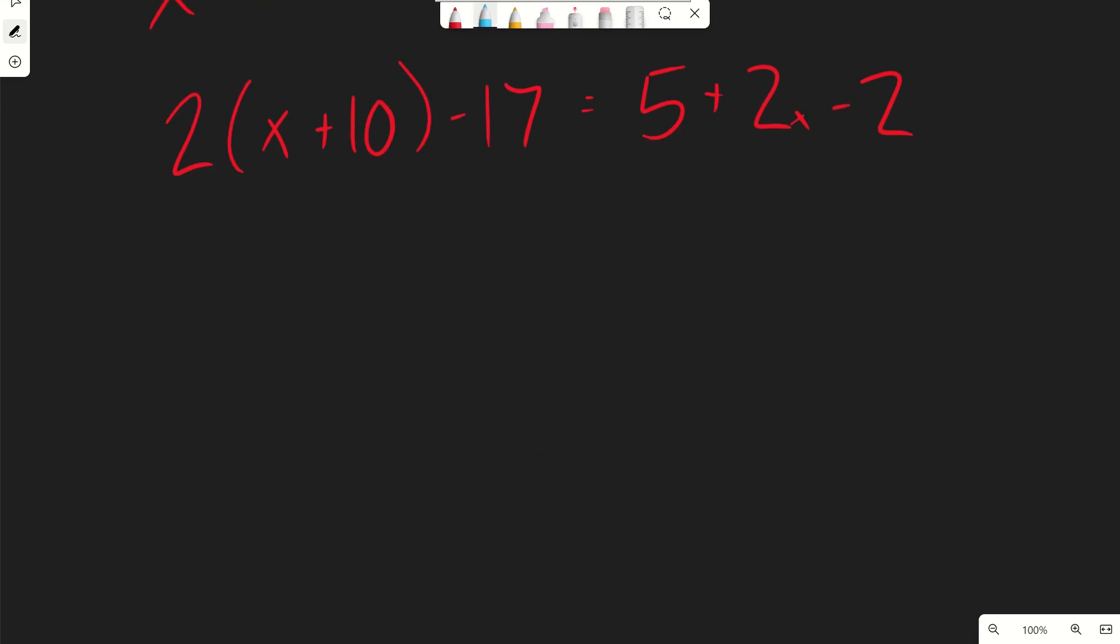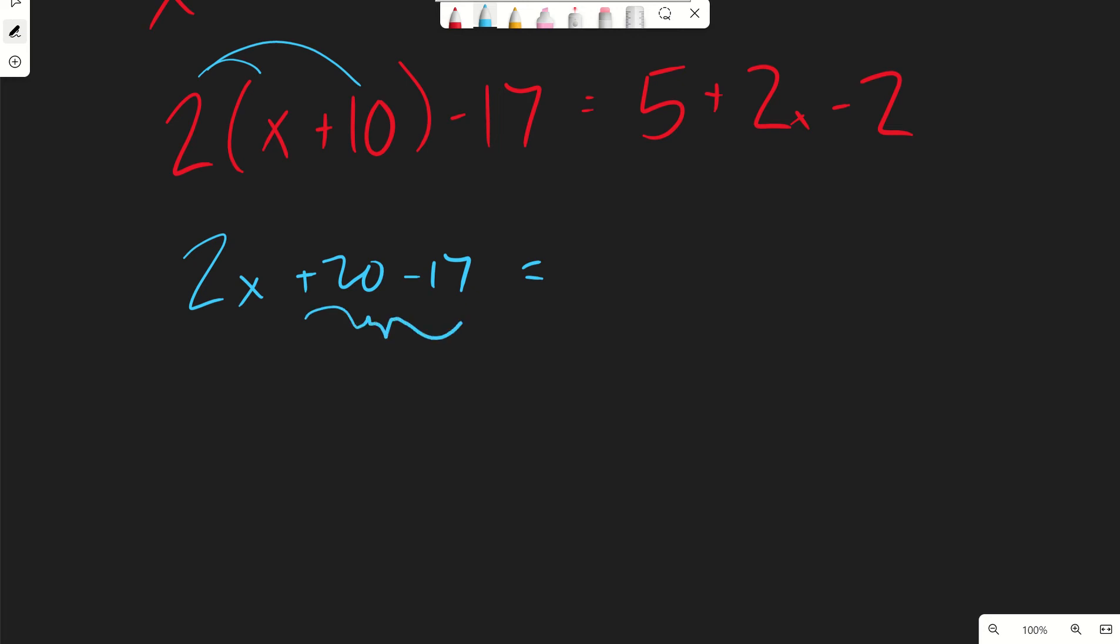Well, let's simplify both sides as much as we can. So over here, let's distribute. This will be 2x plus 20 minus 17, and then we can combine these two and get 2x plus 3. And over here, we'll get, we have 5 and minus 2. We have 3 plus 2x. This is going to give us 3 plus 2x.